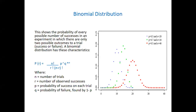If P is 0.5 - that is, probability of success for each trial is 0.5 - and sample size is 20, that's the green distribution. If P is 0.5 and sample size is 14, you will see that as the sample size increases, even the binomial distribution wants to follow normal distribution.